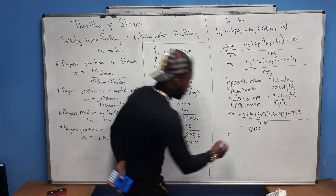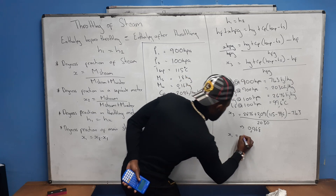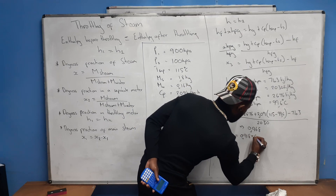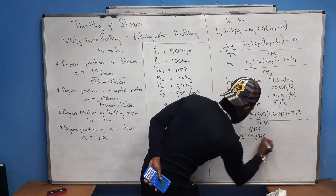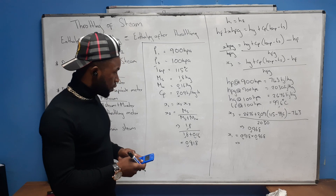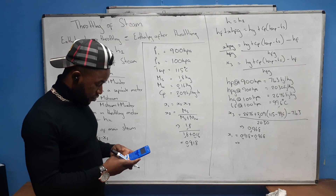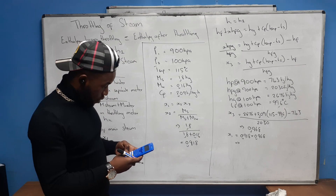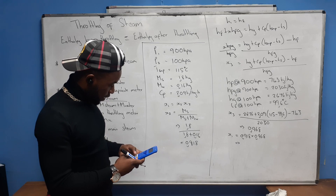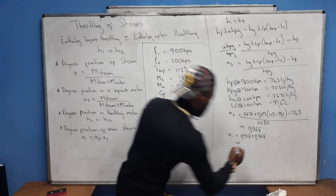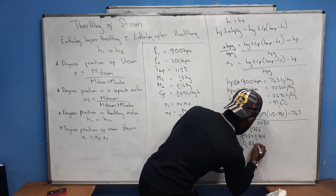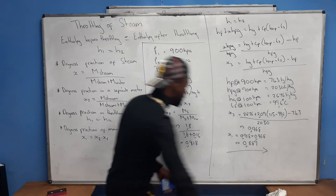Now I have x2 = 0.9184 and x3 = 0.968. So x1 = 0.918 × 0.968 = 0.889. This is the dryness fraction of the main steam, and that is my final answer.